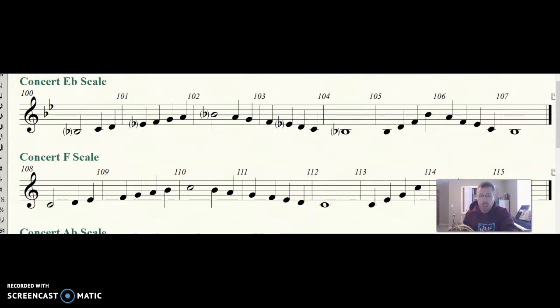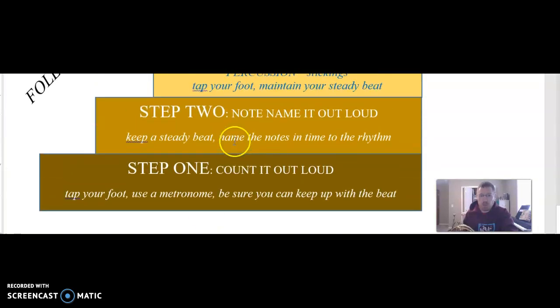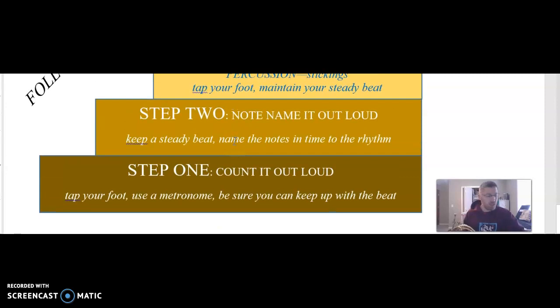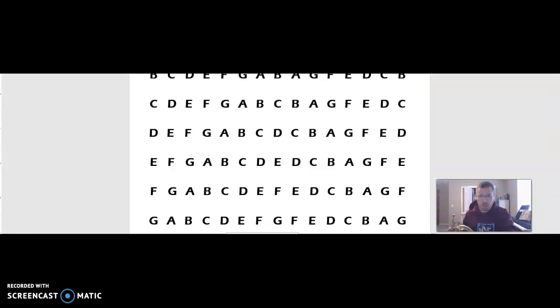So I am going to go back to that sheet and find step two, which is to note name it out loud with a steady beat. I'm going to use my metronome for that, and I have my metronome set anywhere between 60 and 72, as usually those are good places to start. So I have it at 72 right now, and I am going to reference my masters of the alphabet.